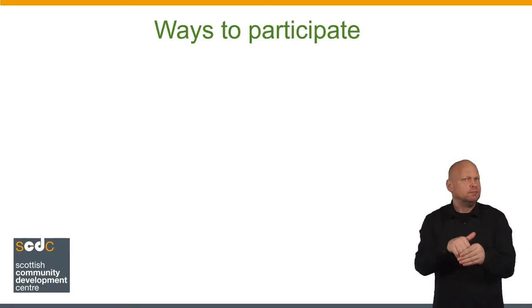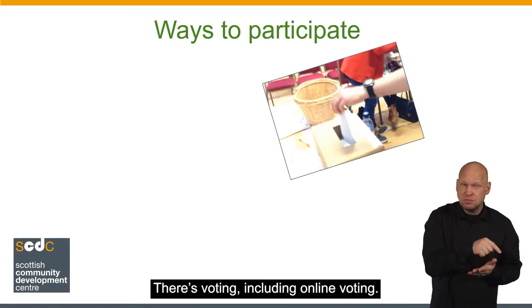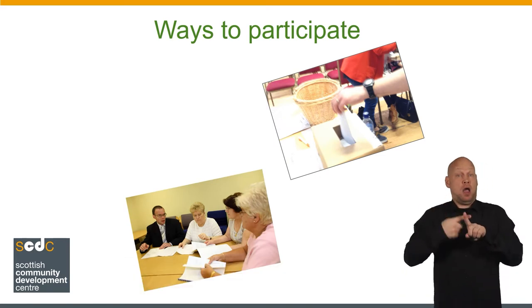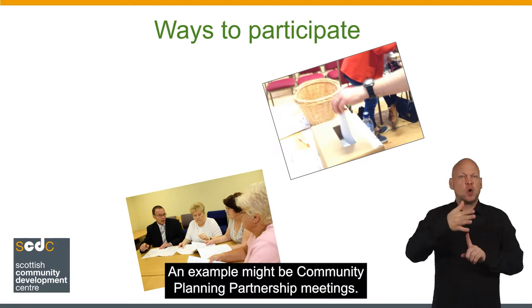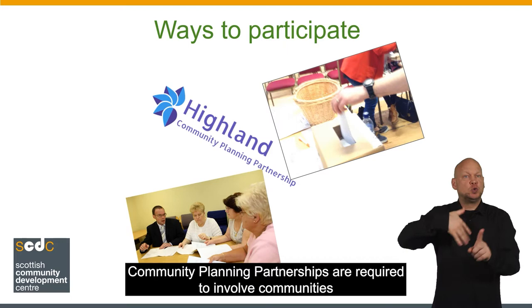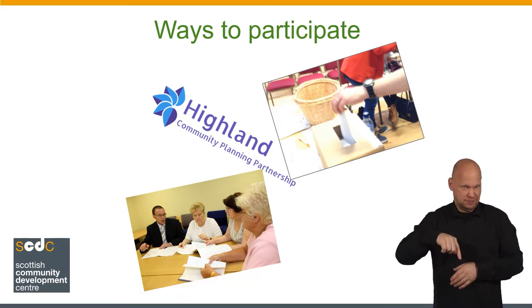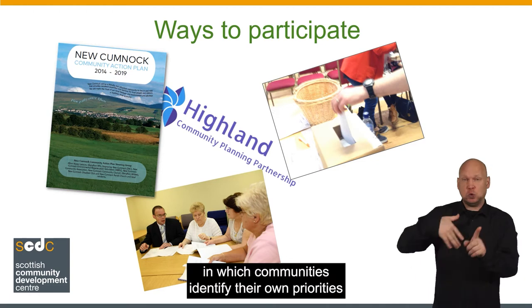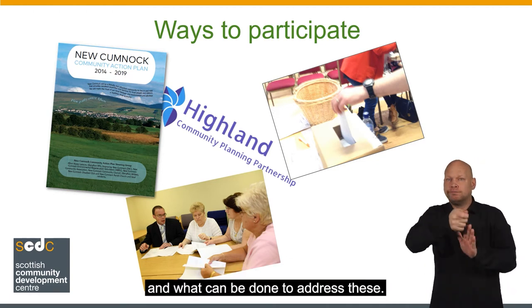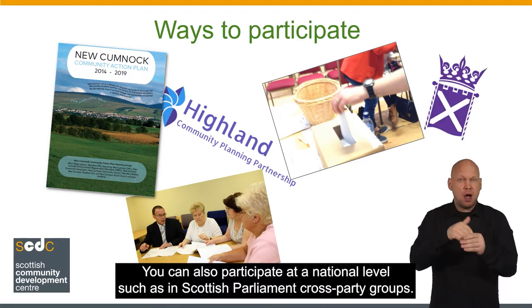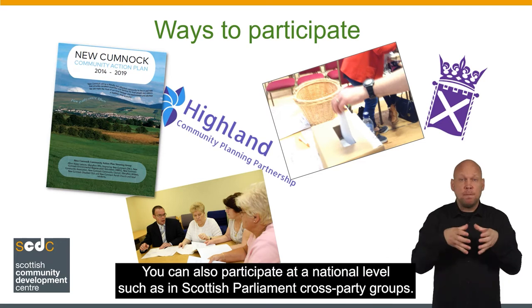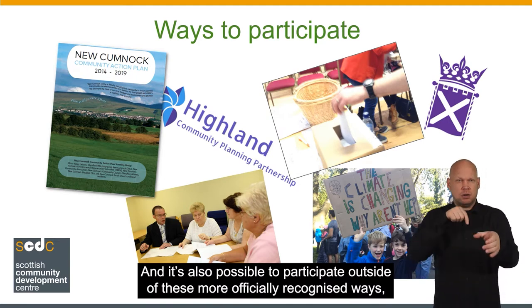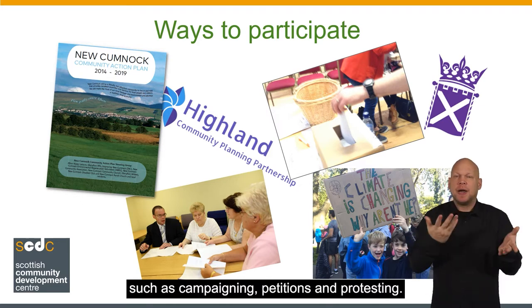There is more than one way to participate. There is voting, including online voting. There are formal meetings between the people who provide public services and the people who use them — an example might be community planning partnership meetings, which are required to involve communities in planning local services. There are more community-led forms of planning, such as community action plans, in which communities identify their own priorities and what can be done to address these. You can also participate at a national level, such as in Scottish Parliament cross-party groups. And it's also possible to participate outside of these more officially recognised ways, such as campaigning, petitions and protesting.